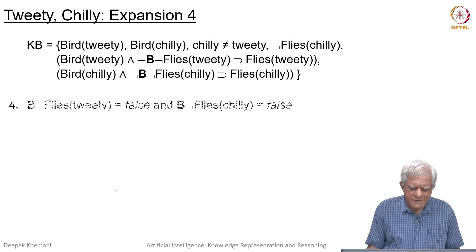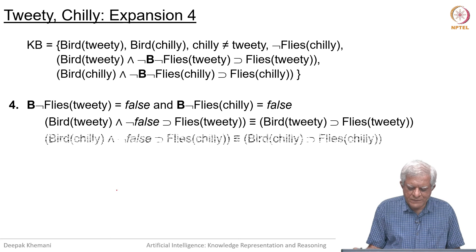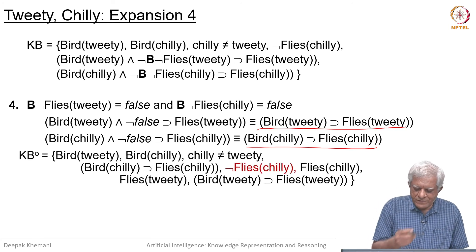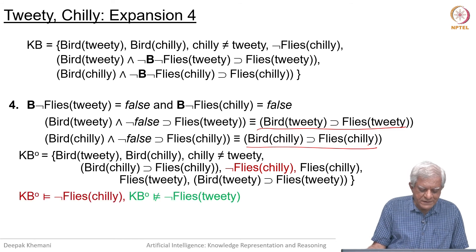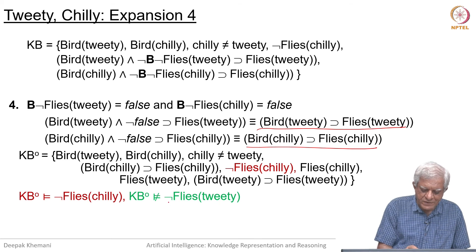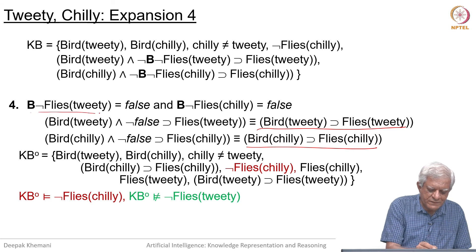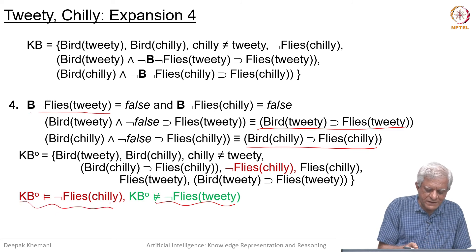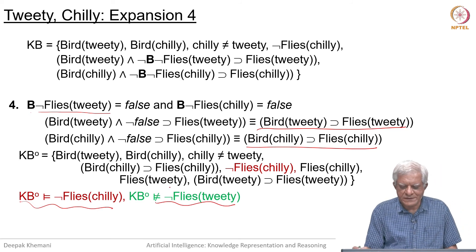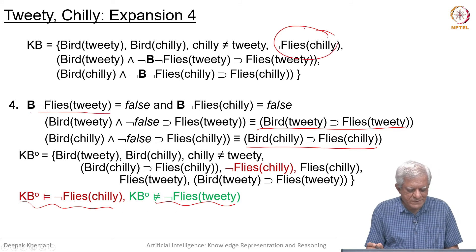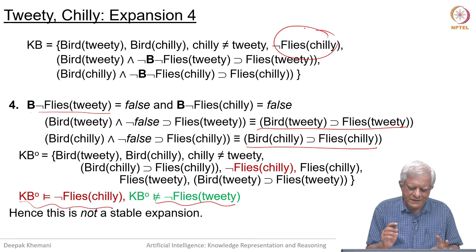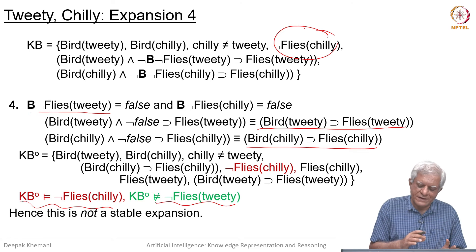The last combination is when both are false. For both birds, the corresponding implications are added to the knowledge base. For Tweety that is fine — we said we did not believe it cannot fly and the knowledge base does not entail that. But for Chile, the knowledge base does entail that it cannot fly, because that is given in the original knowledge base itself. So this is also not a stable expansion. We tried all four combinations and found exactly one stable expansion: Tweety can fly and Chile cannot fly.